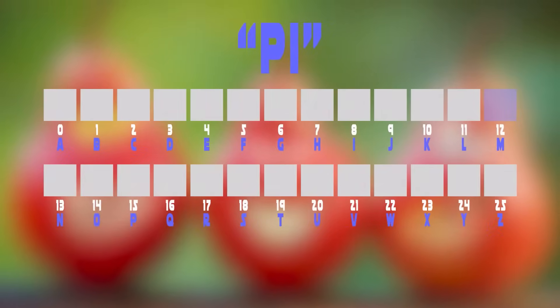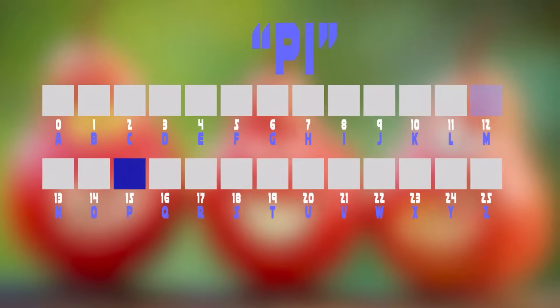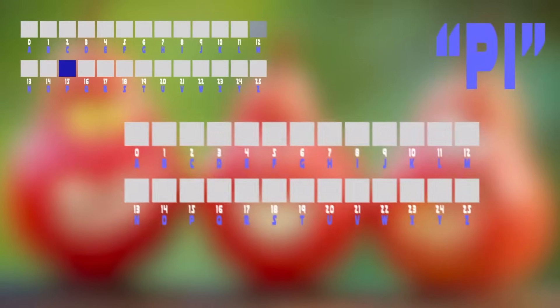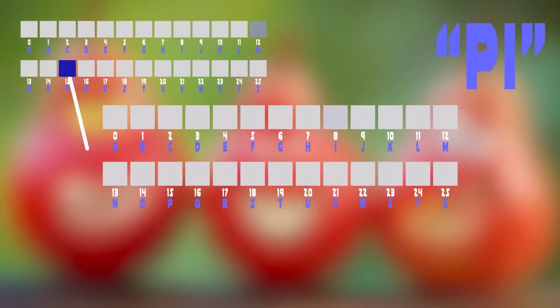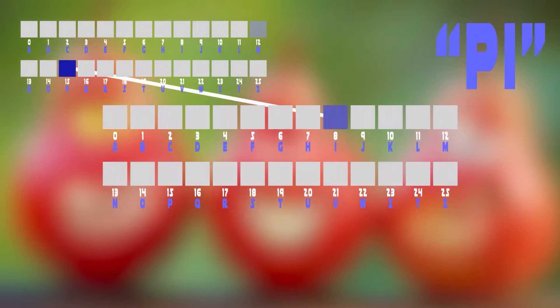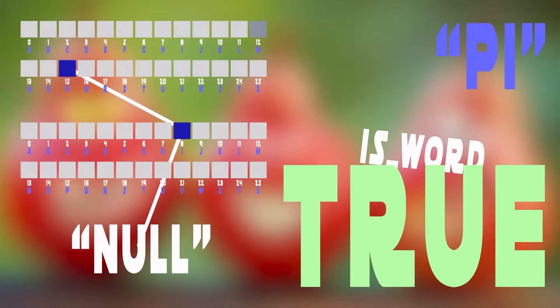Now let's think about another name like 'Pi'. We start from the root and check the index of P, which is 15. We go to position 15 in our pointers array and point to a new node. In this new node, we look at position 8 for the letter I, which points to another new node. Since we reached the end of the name, this new node points to null and we set isWord to true.